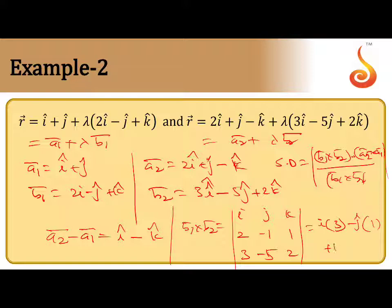Plus k̂ into (-10 + 3), that is -7. So ā₂ - ā₁ = î - k̂, and b̄₁ × b̄₂ = 3î - ĵ - 7k̂.